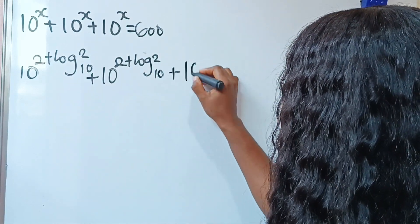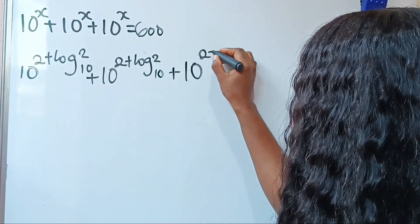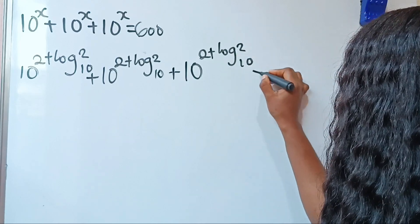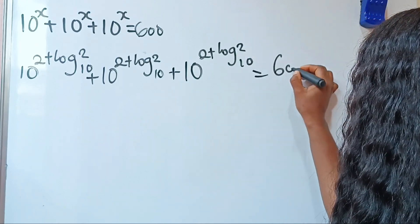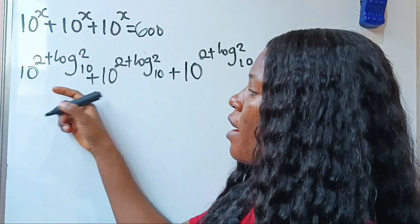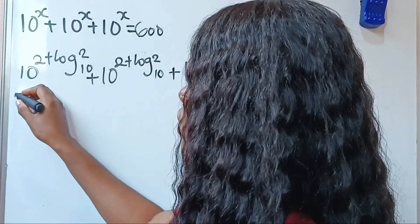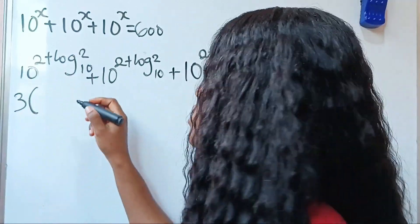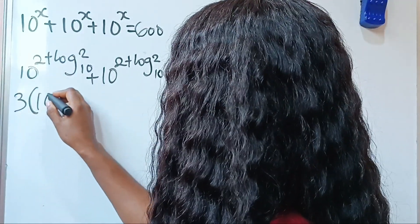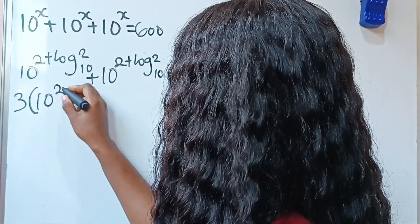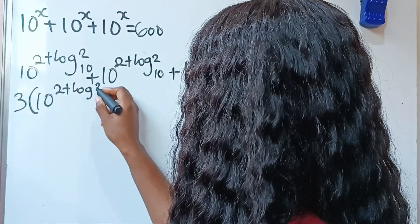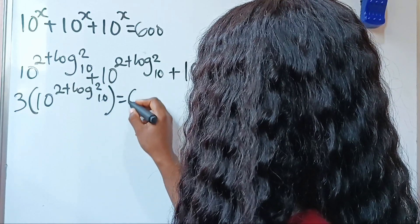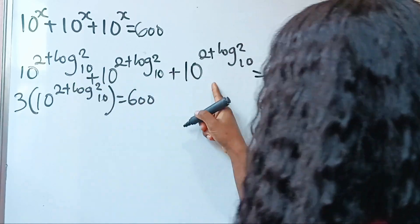Plus 10 to the power of 2 plus log base 10 of 2 is equal to 600. So we have 3 multiplied by 10 to the power of 2 plus log base 10 of 2, which is equal to 600. Now, when you have a to the power of m plus n, this is equal to a to the power of m multiplied by a to the power of n.